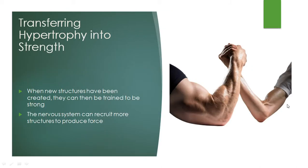In order to actually transfer hypertrophy into strength, we need to make sure that when those new structures are being created — after we've undergone hypertrophy — we then train them to be strong. They're not just going to get strong automatically. We still need to teach the nervous system to recruit all those structures and teach them how to produce force in the most efficient way possible.